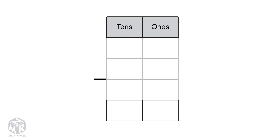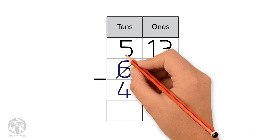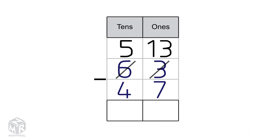Let's try another example: 63 minus 47. Pause this video and try to solve it on your own. We can't subtract 7 from 3, so we regroup one 10 as 10 1s. Now we have 13 1s and 5 10s. Let's subtract the 1s: 13 minus 7 equals 6.